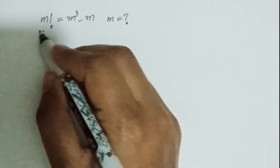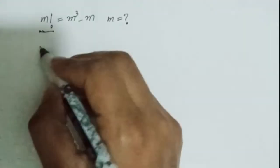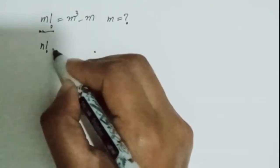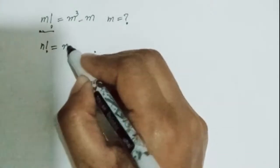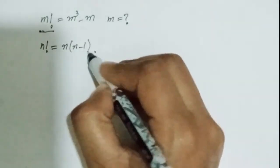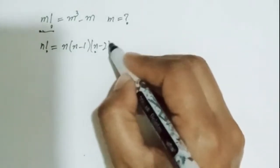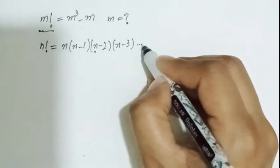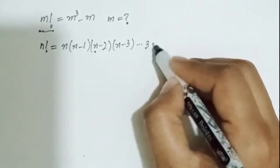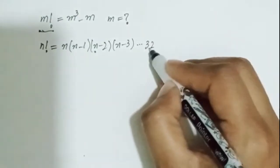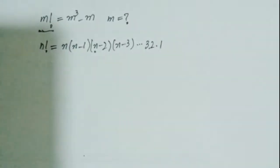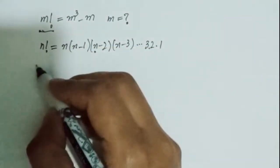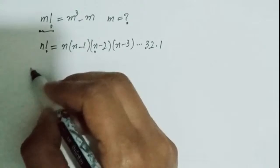First, I want to discuss this term. I can write n factorial as n times (n minus 1) times (n minus 2) times (n minus 3), and so on, up to 3, 2, and 1. So I can use this form when writing m factorial.